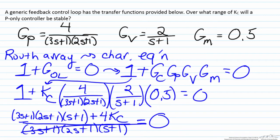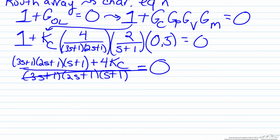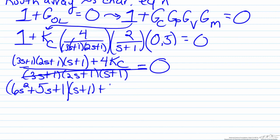The denominator goes away, so what we now need to do is expand out the first term. We will multiply the first two terms together, so we will have (6s²+5s+1)(s+1) + 4KC. This will equal zero.